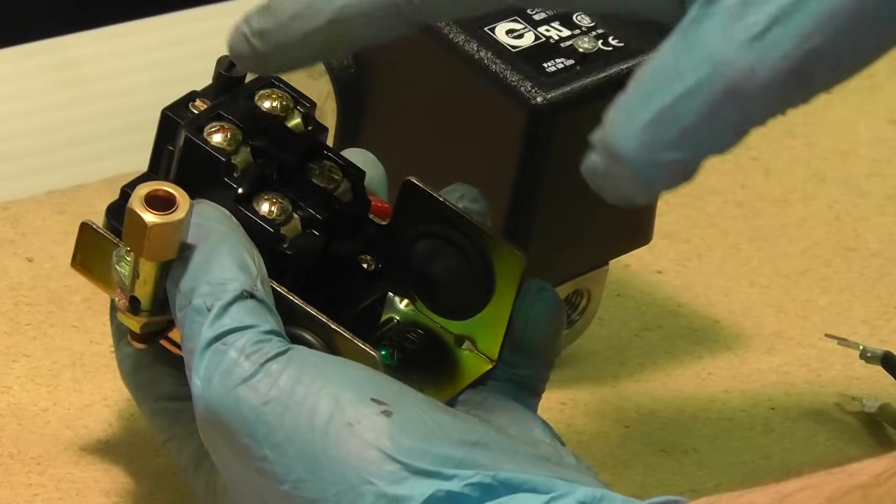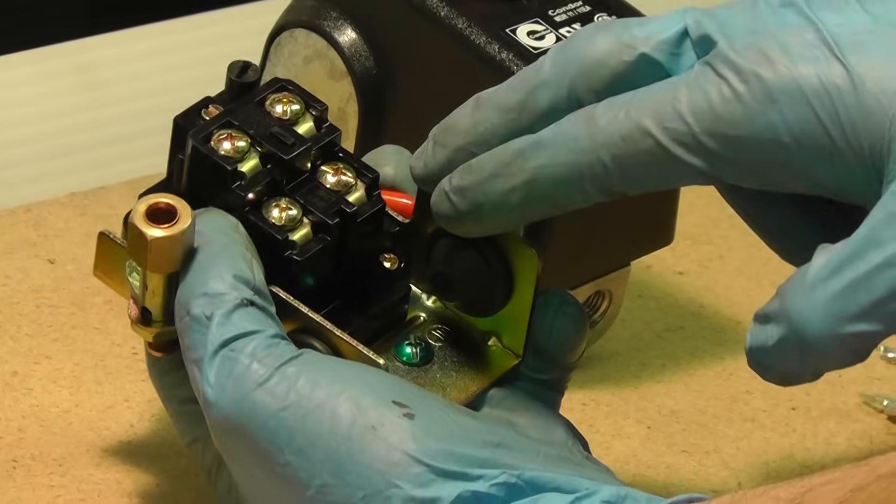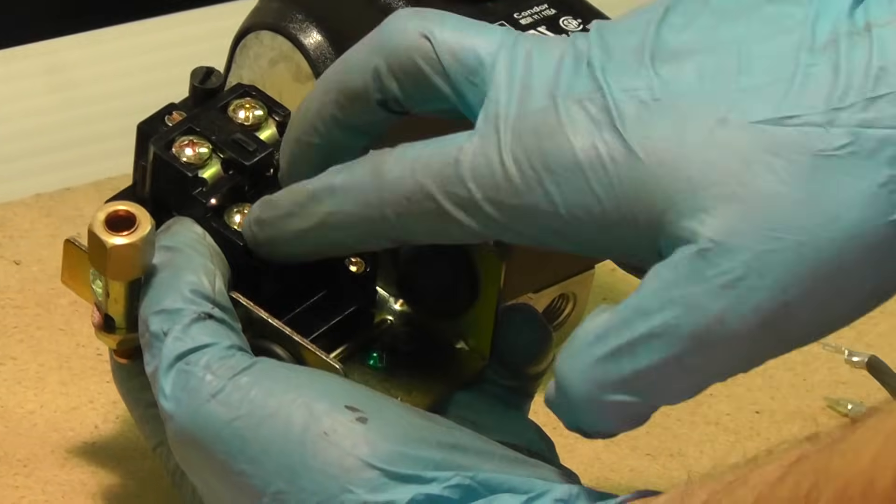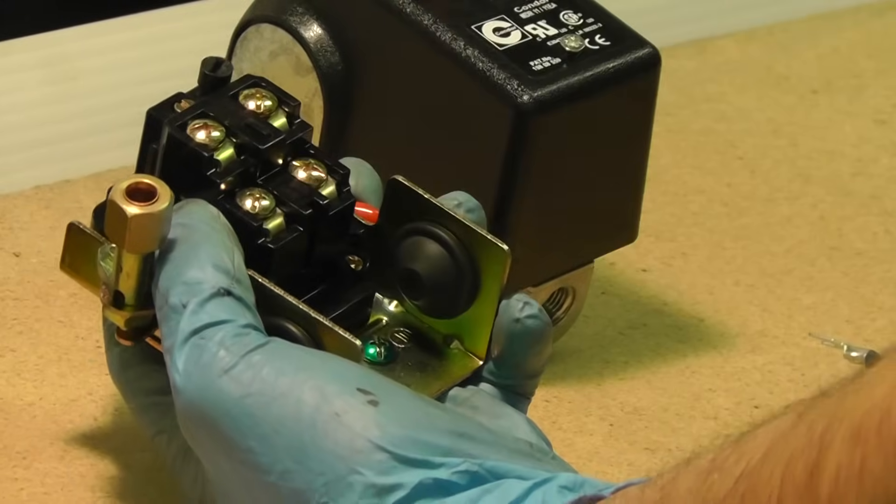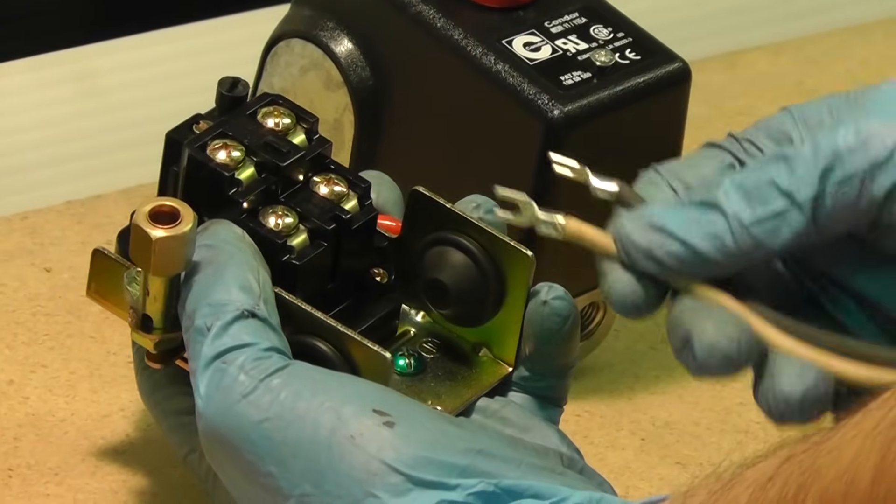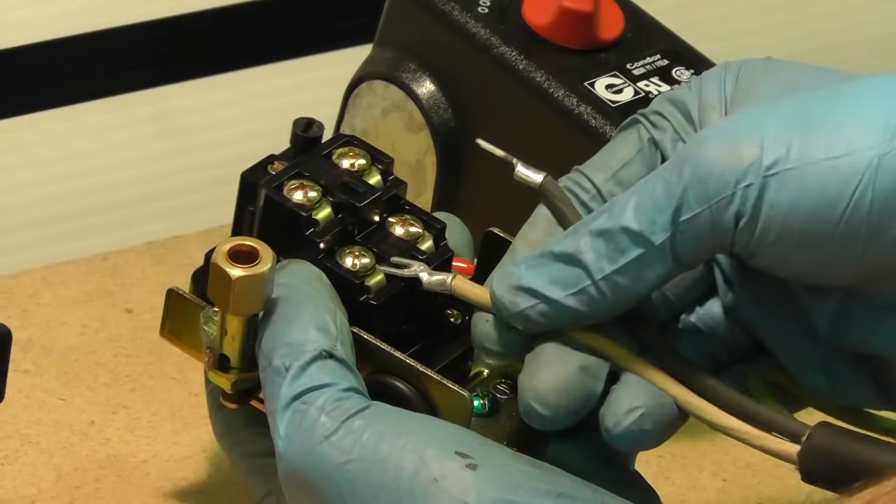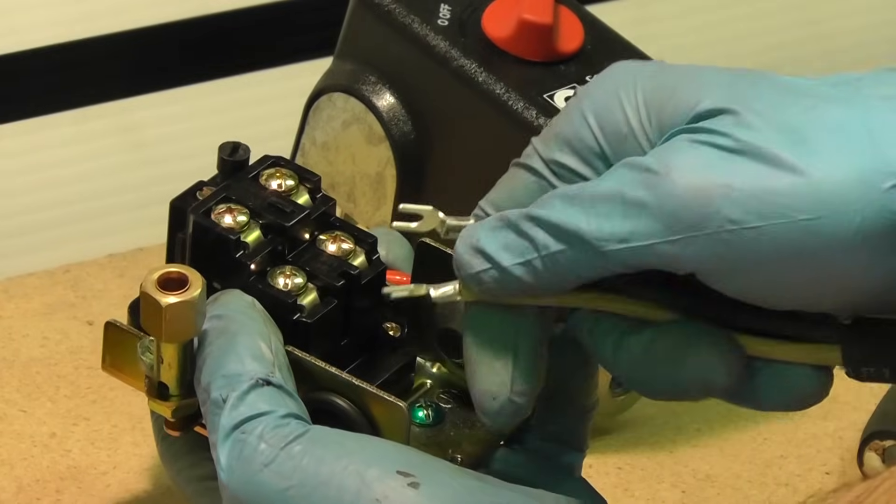The two motor wires will install to the top ports and terminals and line or power cord on the bottom. You'll take your black and white from the power cord and attach it to the line terminals.